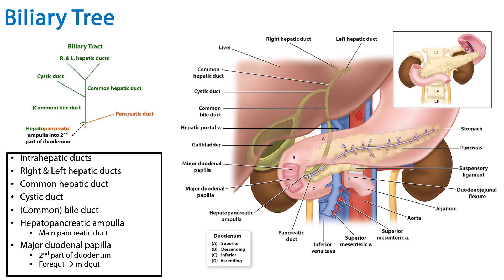So we've discussed the biliary tree. Bile canaliculi feed into intrahepatic ducts, into right or left hepatic ducts, into the common hepatic duct, which joins with the cystic duct to form the common bile duct, which joins with the pancreatic duct to form the hepatopancreatic ampulla, which then drains through the major duodenal papilla into the second part of the duodenum. This is your summary slide.